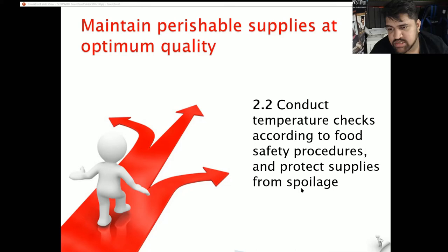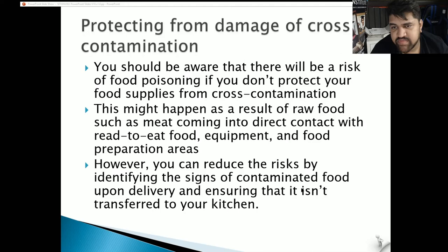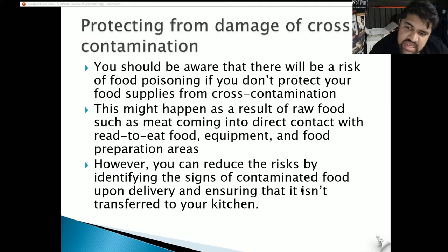2.2: Conduct temperature checks according to food safety procedures and protect supplies from spoilage. Protect from cross-contamination — there is a risk of food poisoning if you don't protect food supplies from cross-contamination. This might happen when raw food such as meat comes into direct contact with ready-to-eat food or equipment and food preparation areas. You can reduce risks by identifying signs of contaminated food upon delivery and ensuring it isn't transferred to your kitchen.